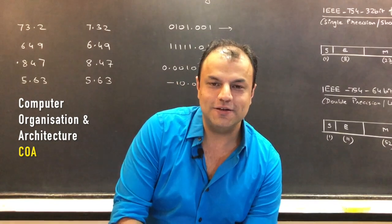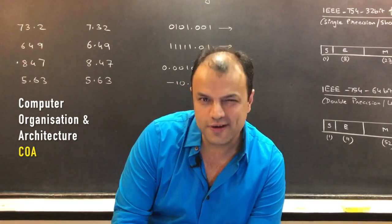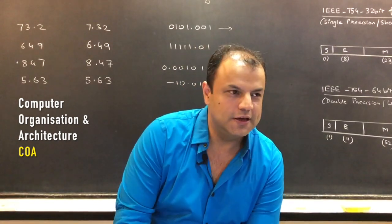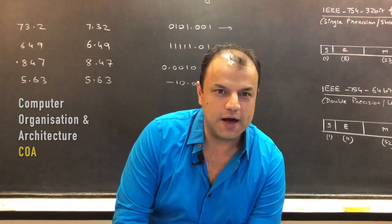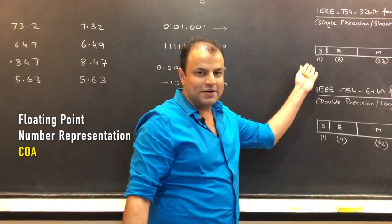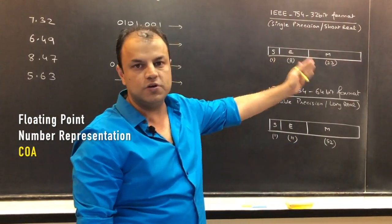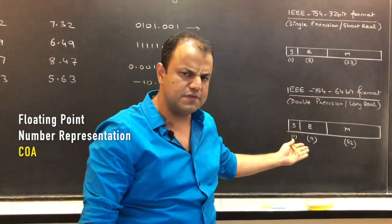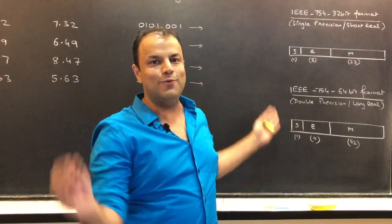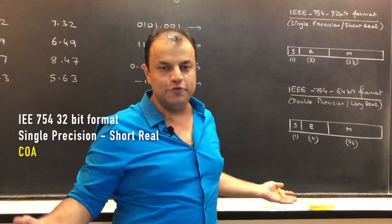Fractions, also called real numbers. We're going to learn how they are stored. They are stored in these formats called single precision and double precision — IEEE 754, 32-bit format and 64-bit format. I won't obviously just throw the format at you.